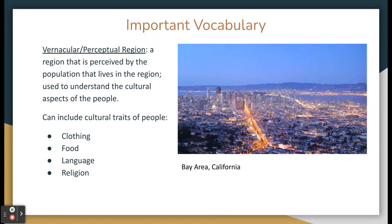The Bay Area is a term often used by people to identify a specific area in Northern California, but it does not specifically include a certain number of cities. Another example could be the Caribbean. There are numerous countries that are part of the Caribbean, but it is not specifically stated which countries are a part of the Caribbean.